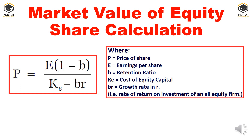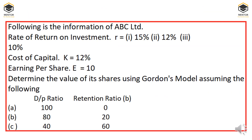Now the problem: the following is the information of ABC Limited. The rate of return r equals 15%, 12%, and 10% across three situations, while the cost of capital ke is 12% in all cases. EPS is 10 rupees. Determine the value of the share using Gordon's model for three dividend payout ratios: (a) 100% payout — retention 0%; (b) 80% payout — retention 20%; (c) 40% payout — retention 60%.